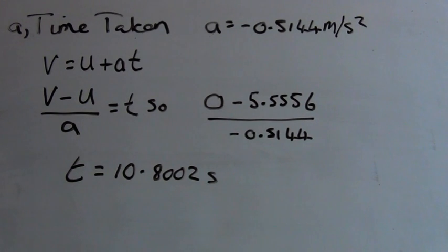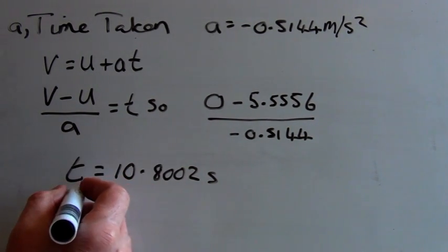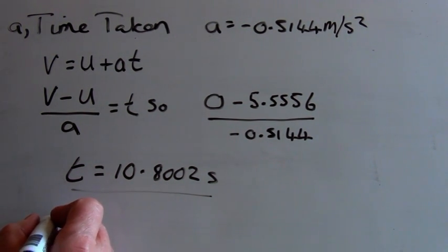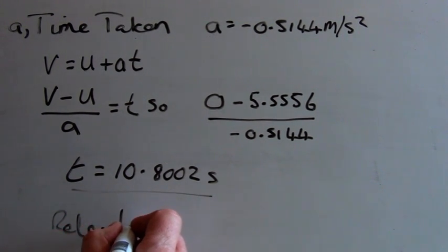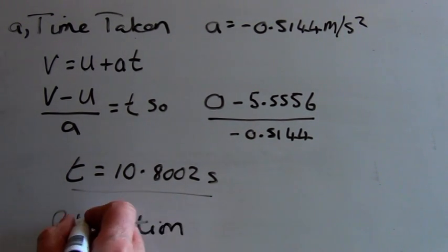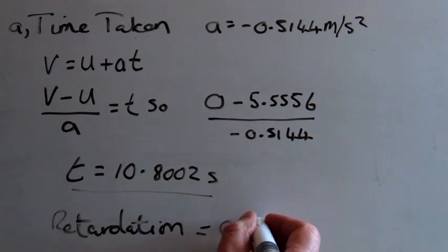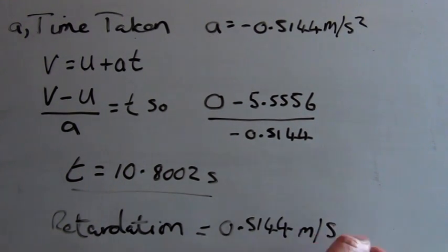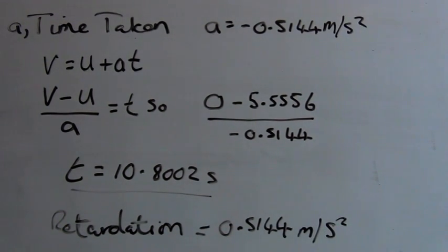Okay, so we've now calculated the time taken. Now the value of the retardation is the opposite to the value of the acceleration, so we can just say that retardation equals 0.5144. So we've now calculated the value of the time taken and the value of the retardation. So let's have a look at another example.